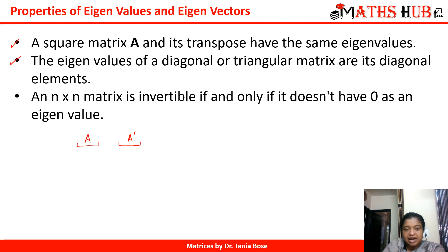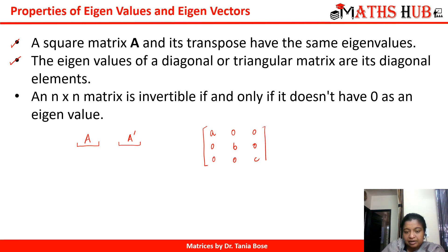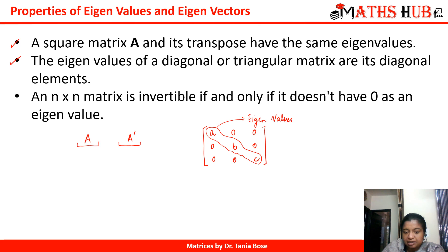The second property says the eigenvalues of a diagonal or triangular matrix are its diagonal elements. If you have a diagonal matrix — where entries exist only on the diagonal and all non-diagonal entries are zero — then all those diagonal elements, say A, B, C, are the eigenvalues. For a triangular matrix, whether upper or lower triangular, the diagonal elements similarly represent the eigenvalues.